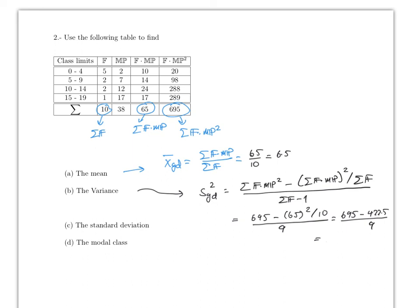The variance is approximately 30.2778. The standard deviation is the square root of that value, which comes out to approximately 5.4979, so rounded to two decimal places it's 5.50.